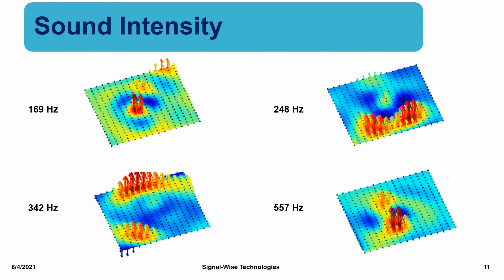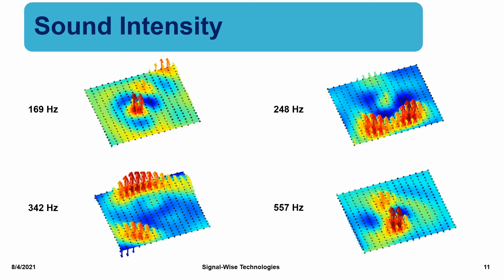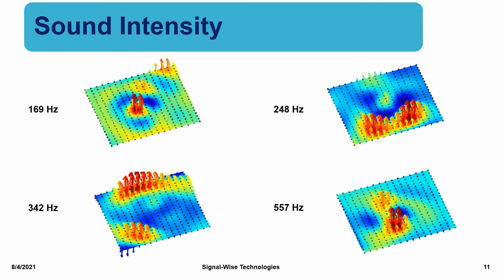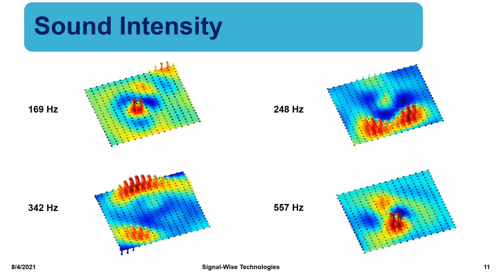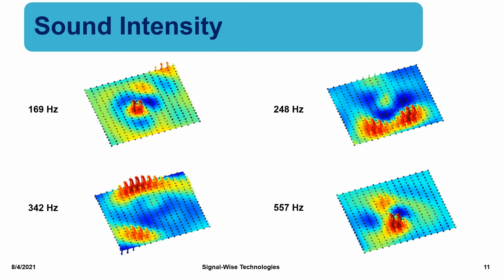Finally, we show the 3D time-averaged acoustic intensity vector distributions on the front surface of a dishwasher at the corresponding resonance frequencies. These acoustic intensity vectors indicate the flows of the acoustic energies from the dishwasher front surface into the surrounding fluid medium.